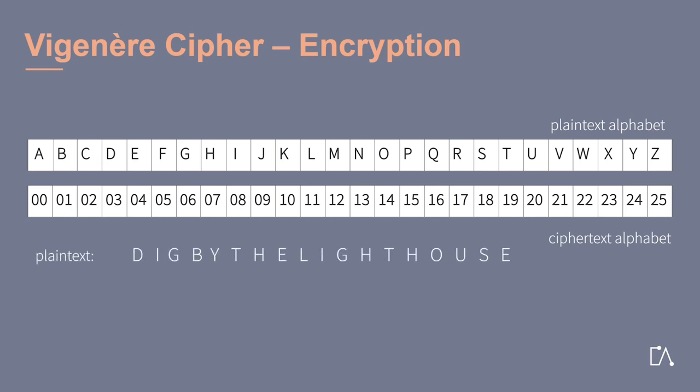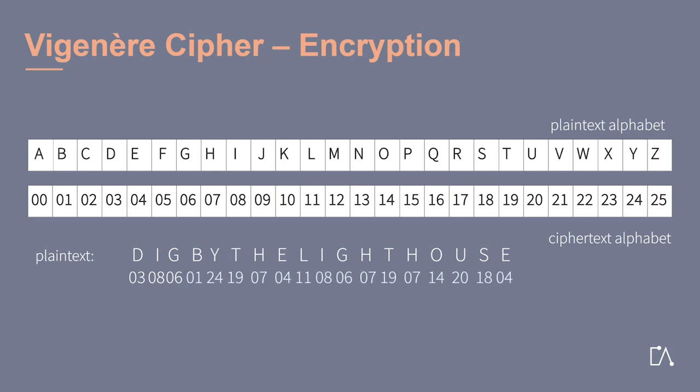This time, we want to send the message that there might be a treasure hidden by the lighthouse. We write this message down without any spaces. Now we convert this message into numbers by writing down the respective number from the second line. This means that for d, we write down 3; for i, we get an 8; and for g, a 6. By the same method, we get the remaining numbers.